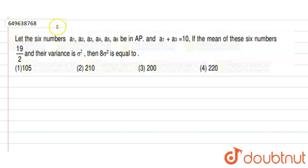Hello students, we are given a question here. Let the 6 numbers A1, A2, A3, A4, A5, A6 be in AP. And A1 plus A3 is given as equal to 10. If the mean of these 6 numbers is given as 19 by 2, and their variance is given as sigma square, then 8 sigma square is equal to?